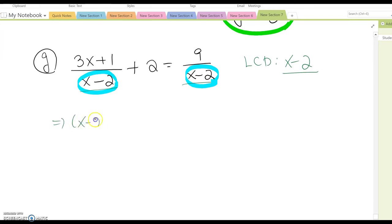Then x minus 2 times 3x plus 1 over x minus 2 plus 2 times x minus 2 equal to 9 over x minus 2 times x minus 2. You cancel this out.